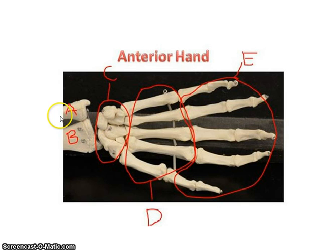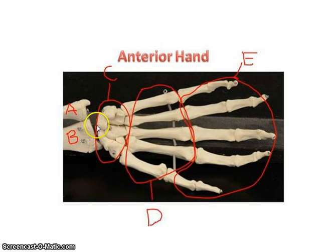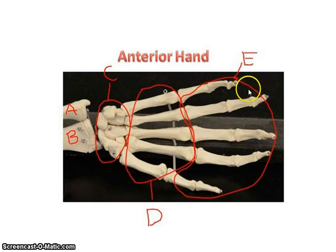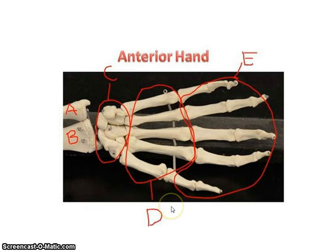Looking at the whole hand, the thumb side is the radial side and the other side is the ulnar side. The eight carpals are in the wrist, the metacarpals are in the palm of the hand, and the finger bones are called the phalanges. That covers all the bones and surface markings from the shoulder down — make sure you review this video.